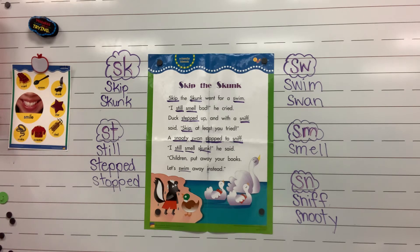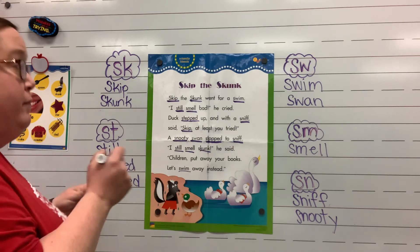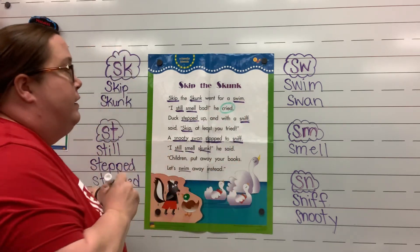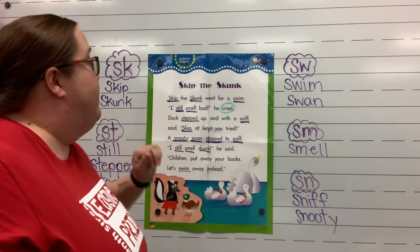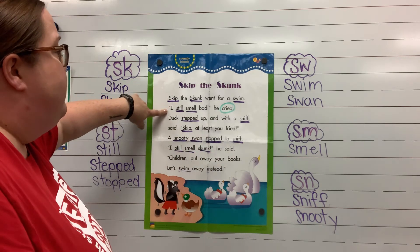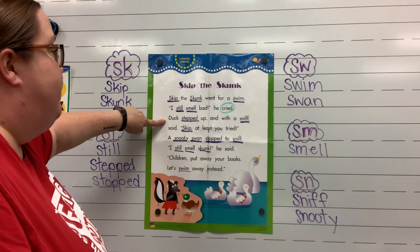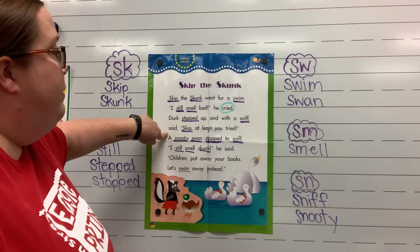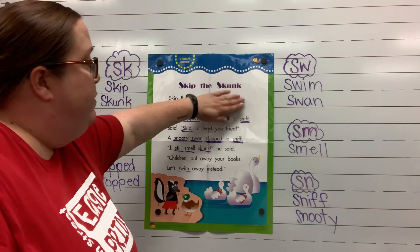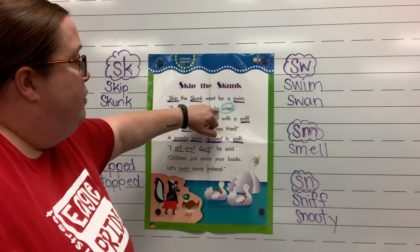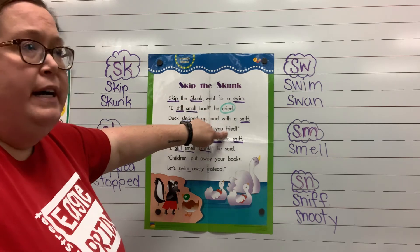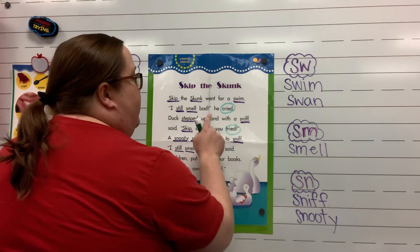Now I'd like to read it one more time and find rhyming words. The first word we're going to rhyme with is cried. Remember, a word that rhymes has the same middle and ending sound. Skip the Skunk went for a swim. I still smell bad, he cried. Duck stepped up and with a sniff said, Skip, at least you tried. Cried and tried rhyme — good job!